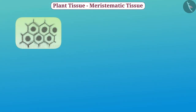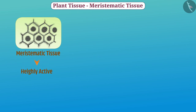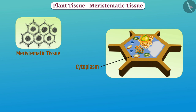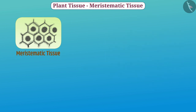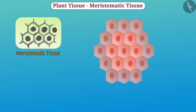The cells of meristematic tissue divide actively, which is why they are highly active. They have dense cytoplasm, a clear nucleus, and thin cell walls. Cells of meristematic tissue do not need to store nutrients, so they do not have vacuoles. The new cells formed from meristem are initially similar to the meristem, but as they grow and mature, their properties gradually change and they become components of other tissues.